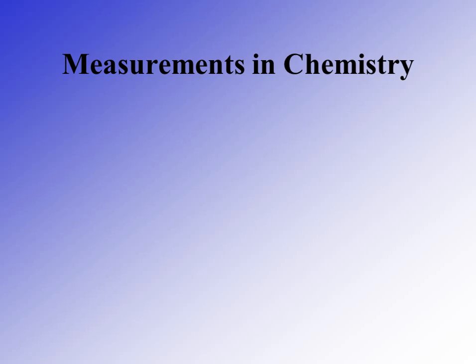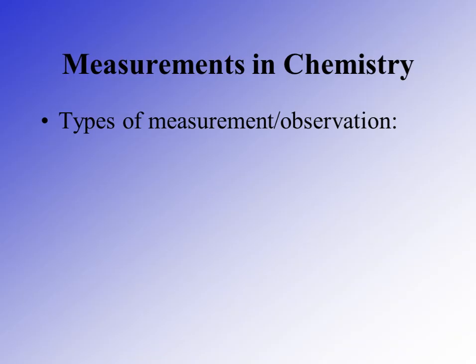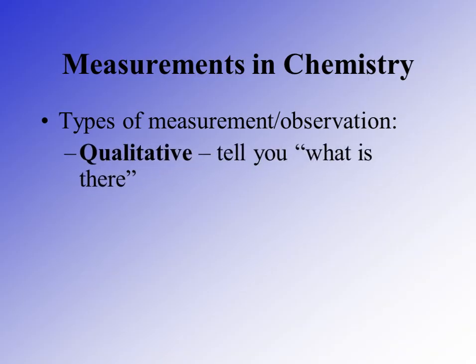When we make measurements in chemistry, these measurements are usually based off of observations that we make of an experiment or substance before us. There are two types of measurements or observations that can be made. Qualitative observations tell you what is there — they describe characteristics that are present.